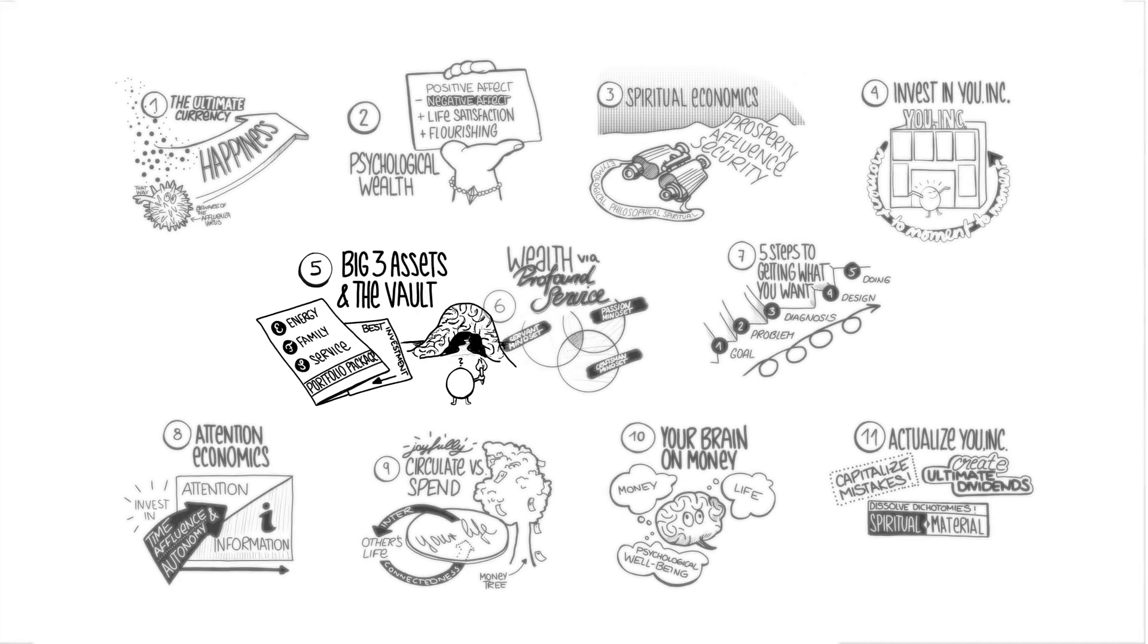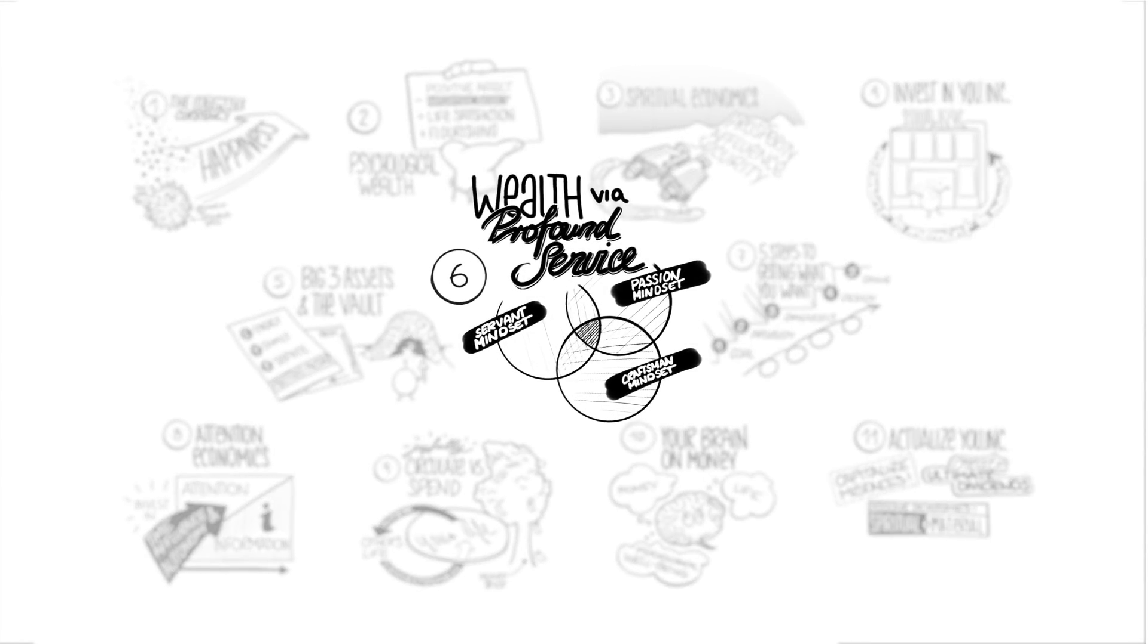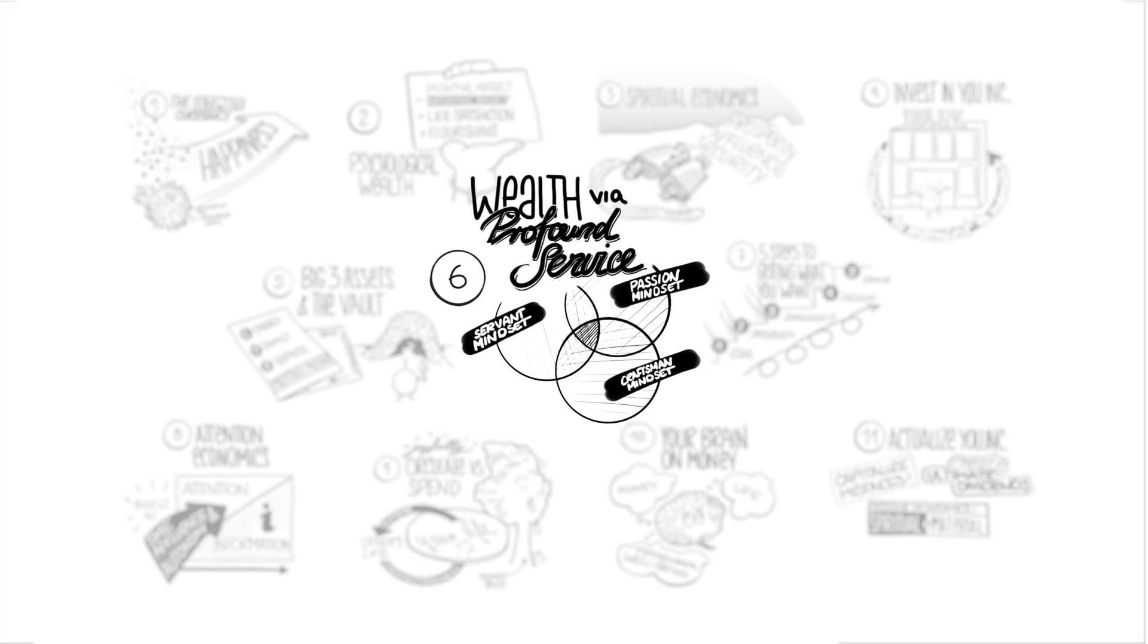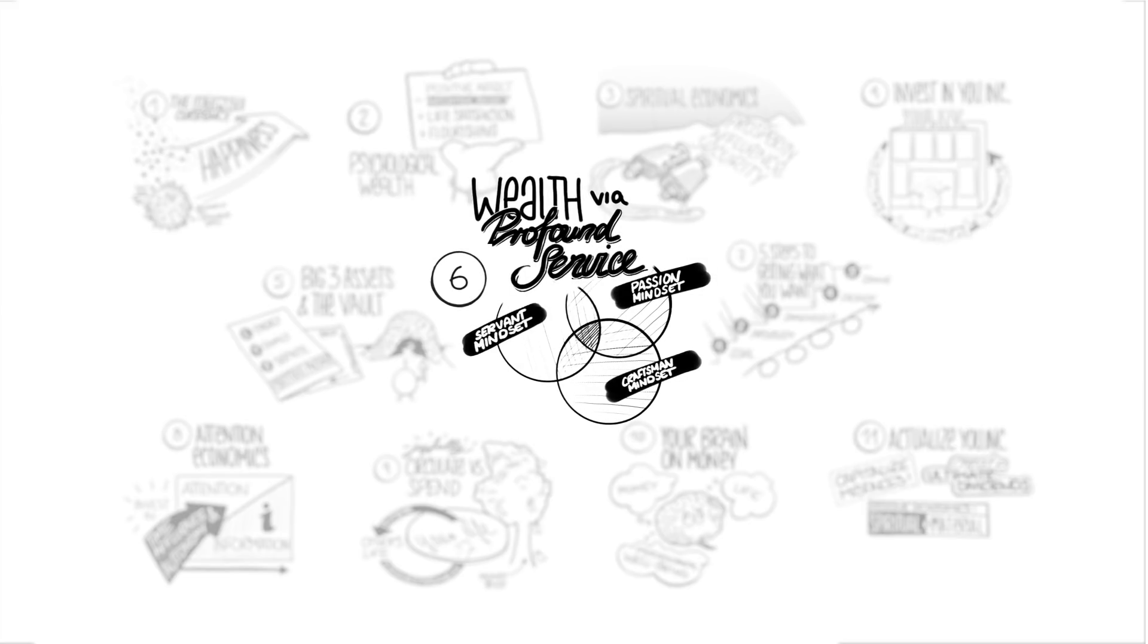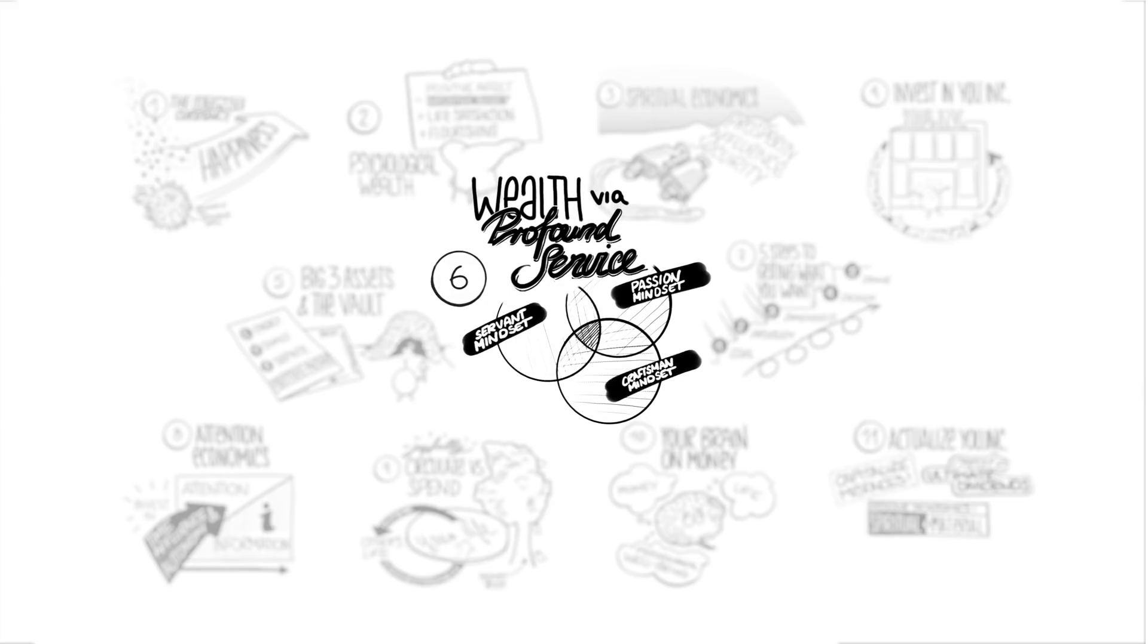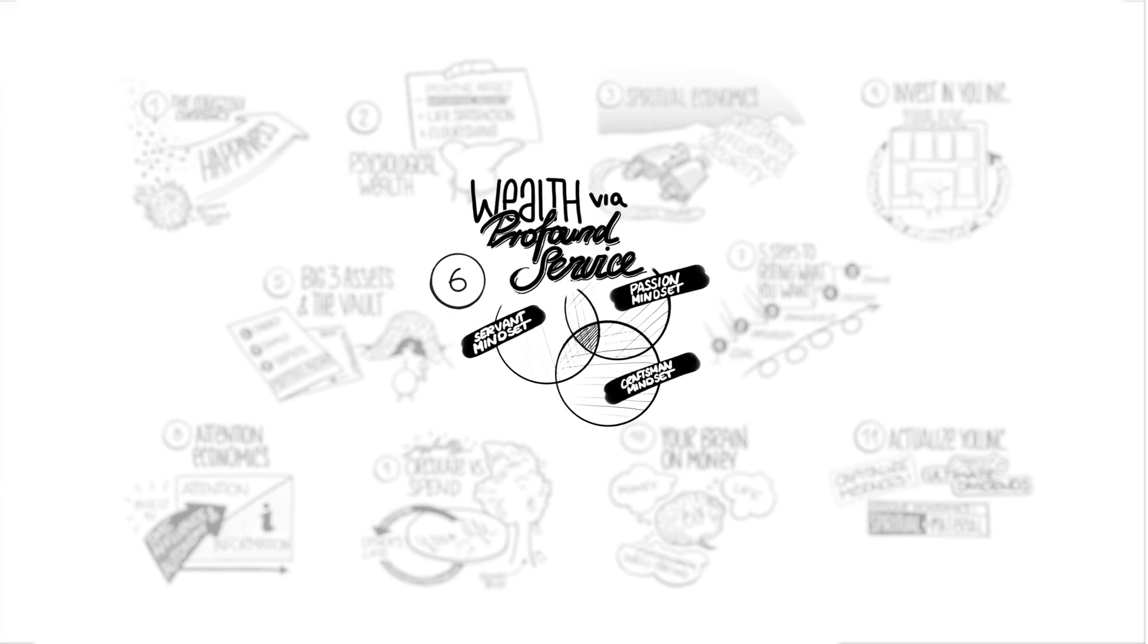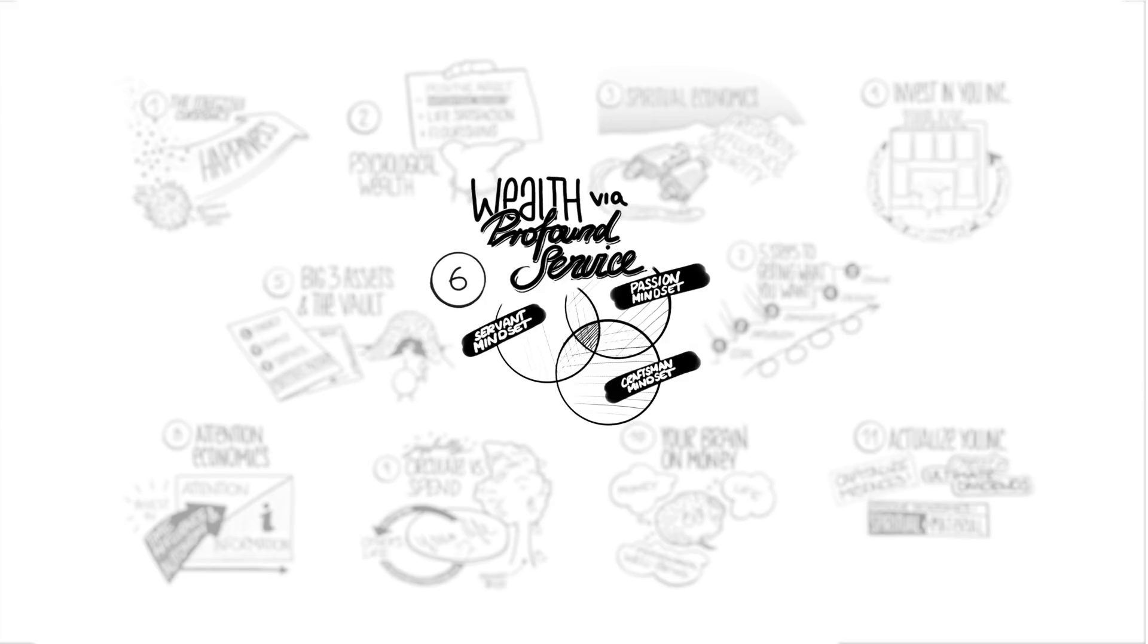Our sixth big idea is how to go about creating financial abundance, which is wealth via profound service. I got that from Steve Chandler. How to create wealth via profound service. We're going to talk about three mindsets: the passion mindset, the craftsman mindset, and the servant mindset. Those three circles that form the hedgehog concept we've talked about before. We're going to apply that to creating wealth and abundance in a material sense in your life.